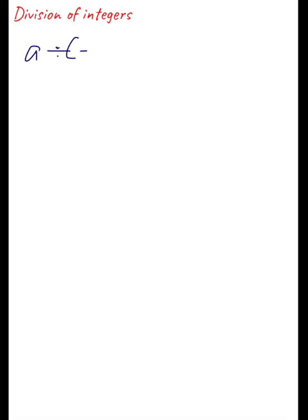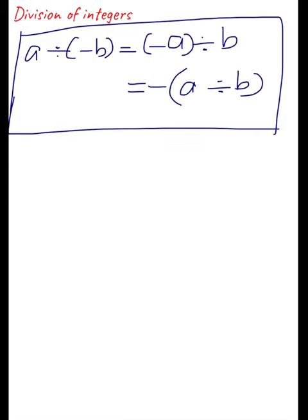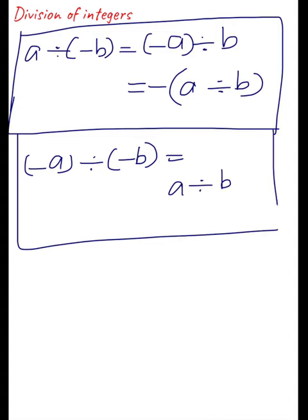Now let's conclude. For any two integers a and b: a ÷ (-b) = (-a) ÷ b, because the minus sign can be taken anywhere. And this equals -(a ÷ b) — put the negative sign before the quotient. This is the case for division of a negative by a positive, or a positive by a negative. For (-a) ÷ (-b), both are negative, and in the answer you will get a ÷ b — a positive result. This is the case for division of a negative integer by a negative integer.